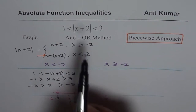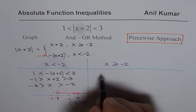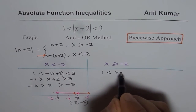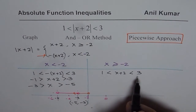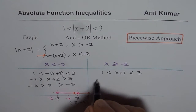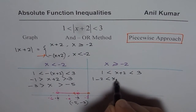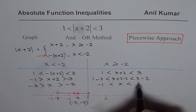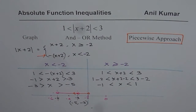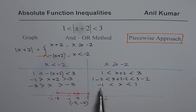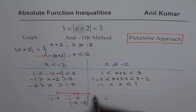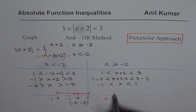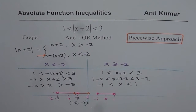Now let us see what happens on the right side. When x is greater than or equal to minus 2, the absolute function can be written as x plus 2 itself. So we solve the double inequality: 1 less than x plus 2 less than 3, meaning x plus 2 should be between 1 and 3. Taking away 2 from each part: 1 minus 2 gives minus 1, and 3 minus 2 gives 1. So in the interval on the right side of minus 2, the solution is x between minus 1 and 1.